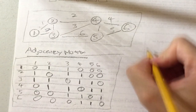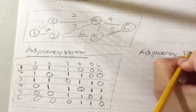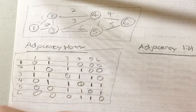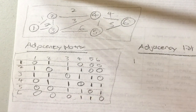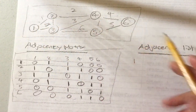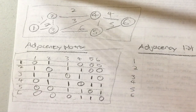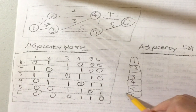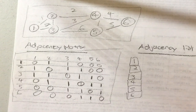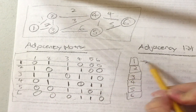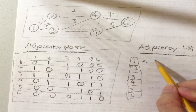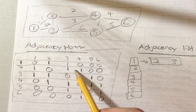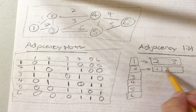Now let's look at another way to represent a graph: an adjacency list. Instead of putting ones and zeros, we just have a list of all the neighbors for each vertex. So for vertices one through six, vertex one's neighbors are two and three, and vertex two's neighbors are one, three, and four.